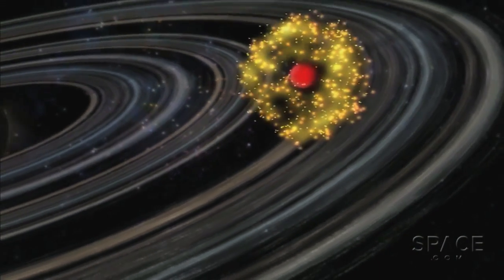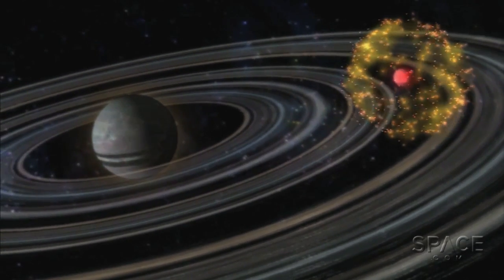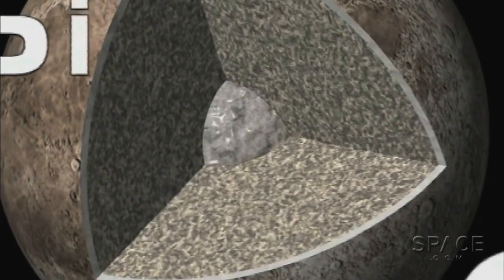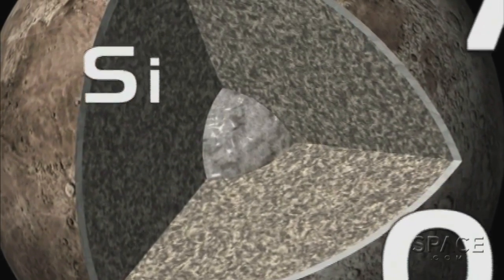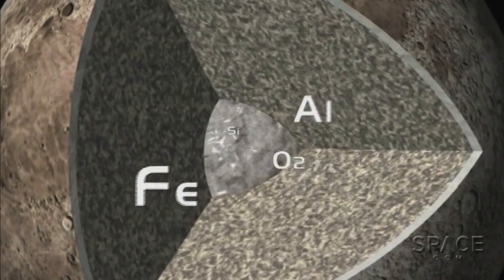But no one has been able to fully explain why the Moon and the Earth seem to be made of exactly the same materials, and especially that they show identical types of isotopic oxygen.